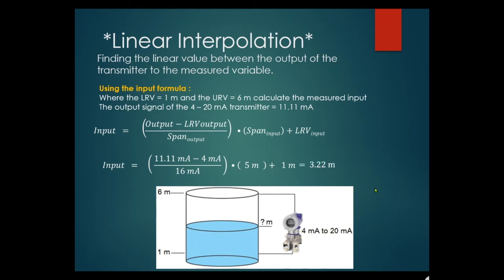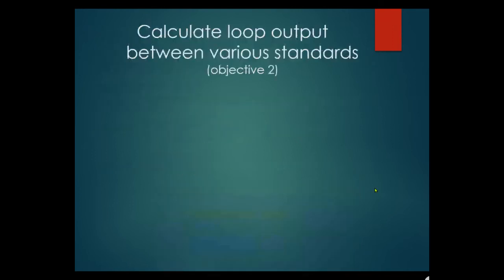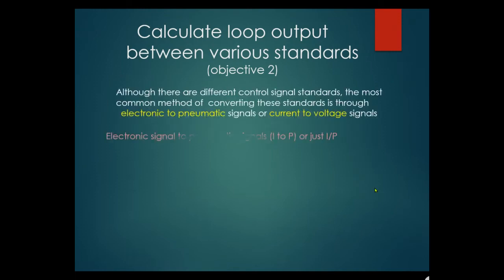Next objective: calculate loop output between various standards. Although there are different control signal standards, the most common method of converting them is through electronic-to-pneumatic signals or current-to-voltage signals.